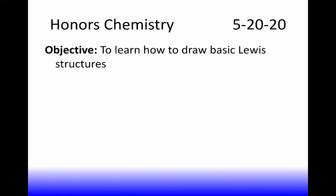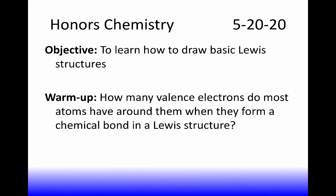Okay, so now we're moving on to how to draw basic Lewis structures. The first question we need to understand is about valence electrons. How many valence electrons do most atoms have around them when they form a chemical bond in a Lewis structure? You should have that from the last class.